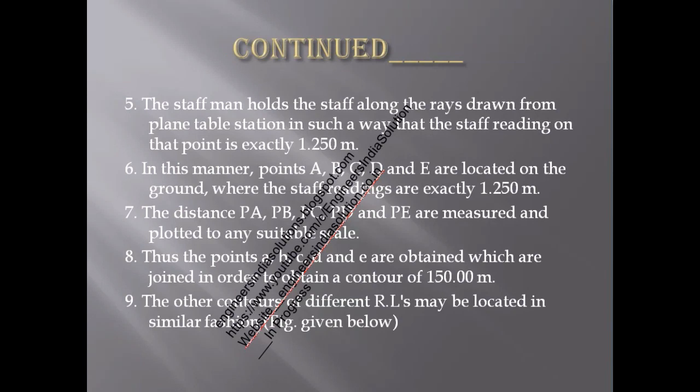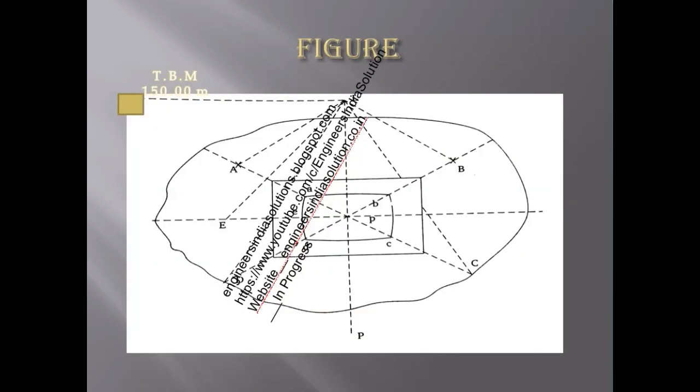A man holds the staff along the rays at equal distances. You can plot those distances as A, B, C, D, and E and locate them to locations as assumed. The distances of PA, PB, PC, PD and PE are measured and plotted to a suitable scale. Thus these points are taken as A, B, C, D and E which are obtained and joined together. The other contours of different RLs may be locally located in the similar way, and for that I have drawn a figure and it will show you how it is to be done.